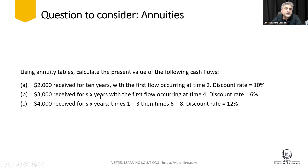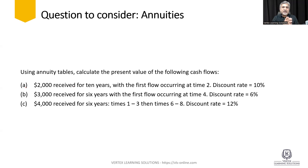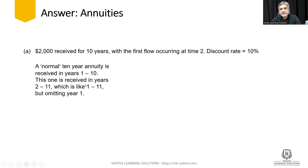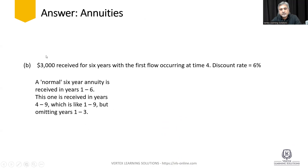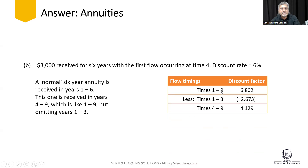Part B says: $3,000 received for six years, with the first flow occurring at time 4, discount rate 6%. So the first flow is at year 4 and it continues for six years: year 4, 5, 6, 7, 8, and 9 — that's a total ending at year 9. So you will take the annuity factor from year 1 to year 9, and then subtract the first three years. A normal six-year annuity is from year 1 to year 6, but this one is received from year 4 to year 9. So when you take this annuity factor, you take year 1 to year 9 — which is 6.802.